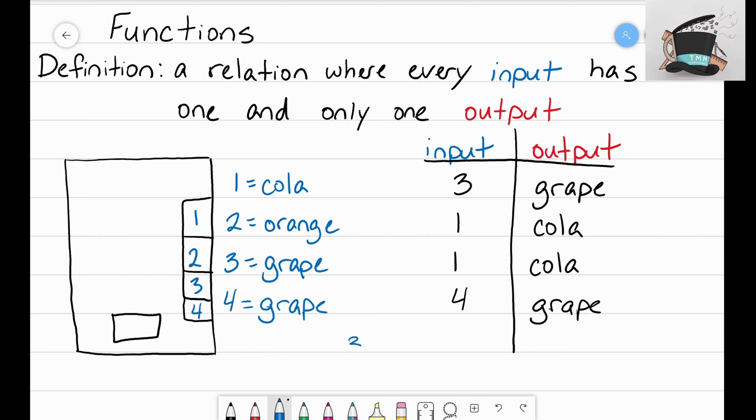I want you to think about this as when I hit the button for number three, I get a grape soda, and when I hit the button for number four, I also get out a grape soda. Now it is totally okay for you to have two different inputs that give you the same output.